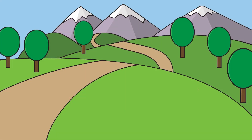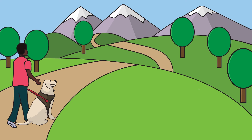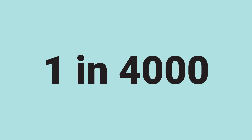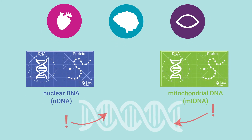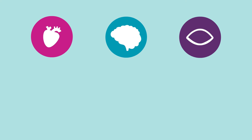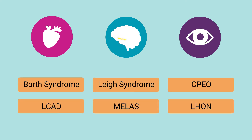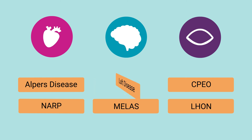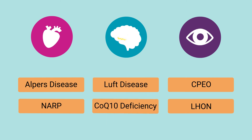Regardless of the cause, when the powerhouses of our cells do not function properly, mitochondrial disease can occur. About 1 in 4,000 people have a mitochondrial disease, and no case is exactly alike. Symptoms can vary greatly, depending on what organ, what type of DNA, and what part of the DNA is affected. For example, mitochondrial diseases can affect the heart, brain, eyes, or several organs. Having the same disease, or even the same mutation as someone else, doesn't necessarily mean you will live with the same symptoms or challenges.